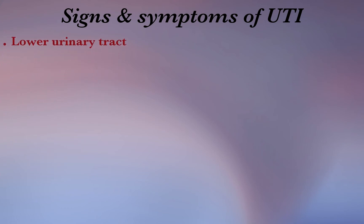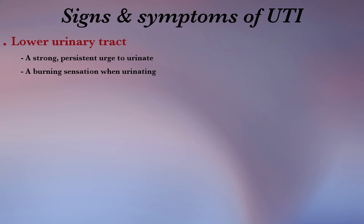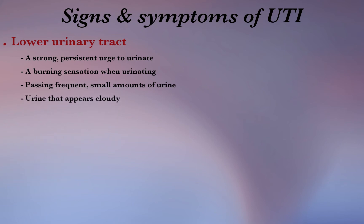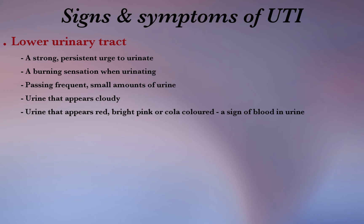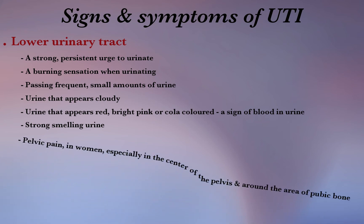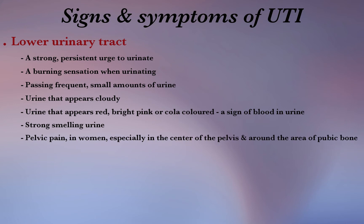Now let us discuss the signs and symptoms of UTI. Lower urinary tract infection shows the following signs and symptoms: a strong persistent urge to urinate, a burning sensation when urinating, passing frequent small amounts of urine, urine that appears cloudy, urine that appears red, bright pink, or cola-colored — a sign of blood in the urine — strong-smelling urine, and pelvic pain in women especially in the center of the pelvis and around the pubic bone. In case of upper urinary tract infection, along with the above symptoms, there can be fever, vomiting, and abdominal pain.